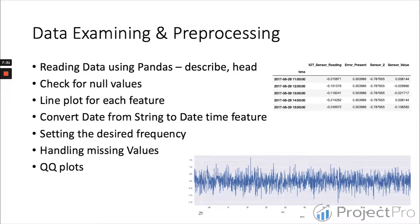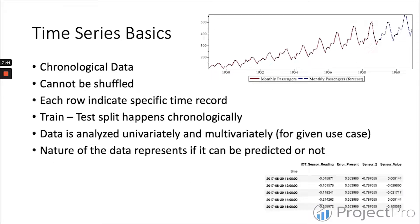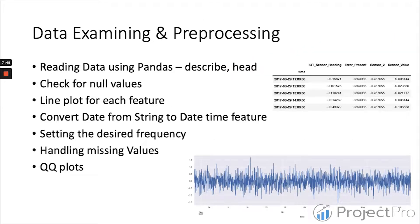Line plot for each feature - we do plot a line plot just to see how the time series is looking, because the nature of data represents if it can be predicted or not. That is why we do this line plot. Convert date from string to date time feature - that is another preprocessing technique we use.